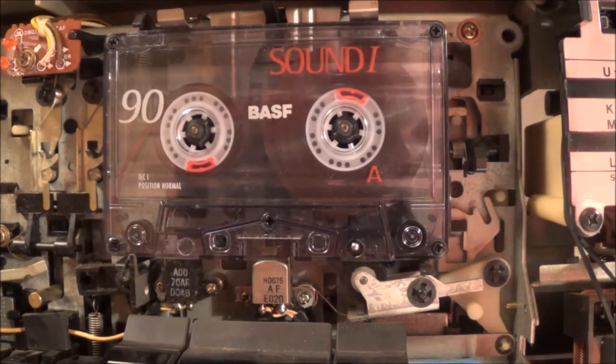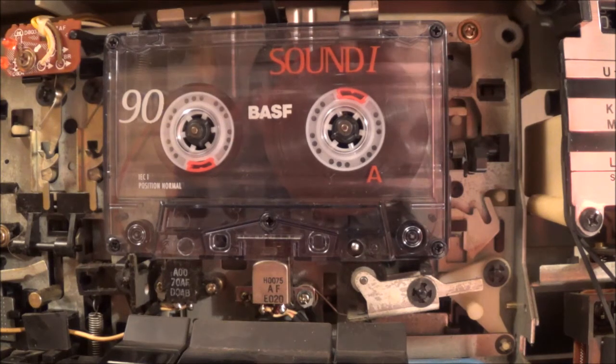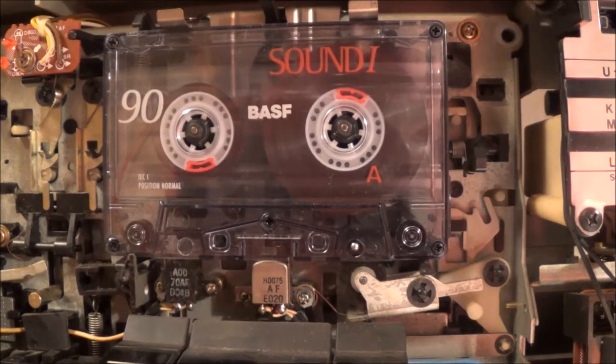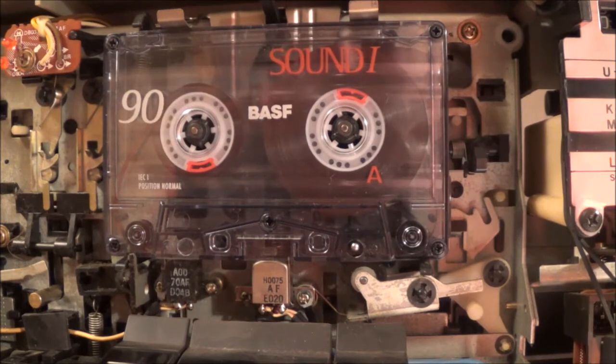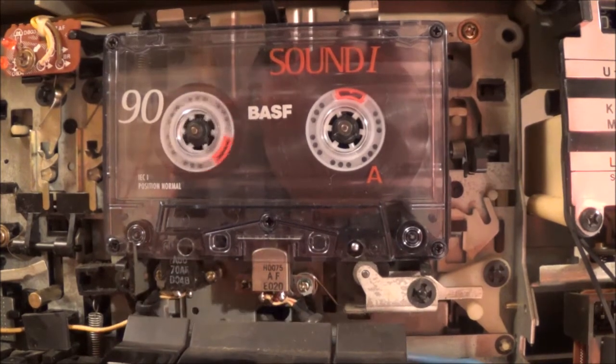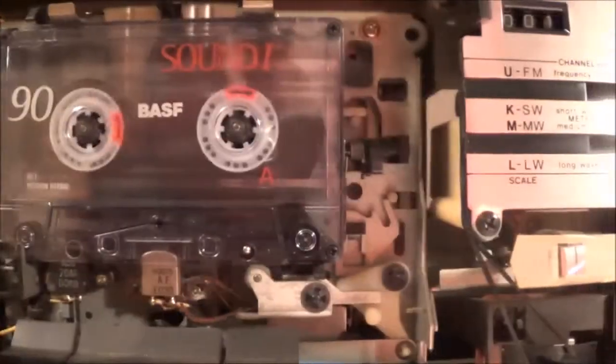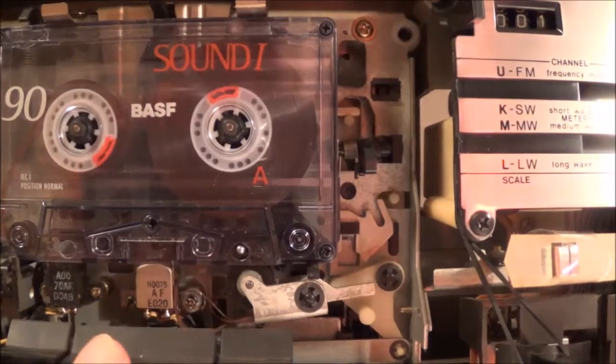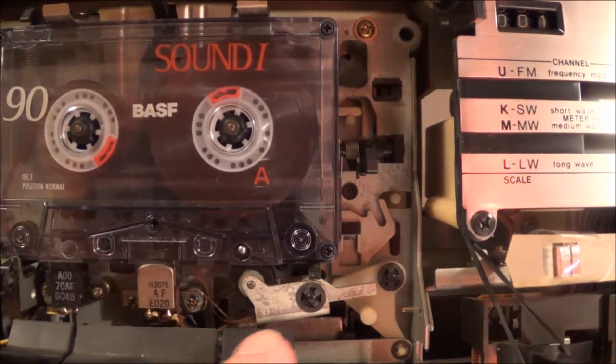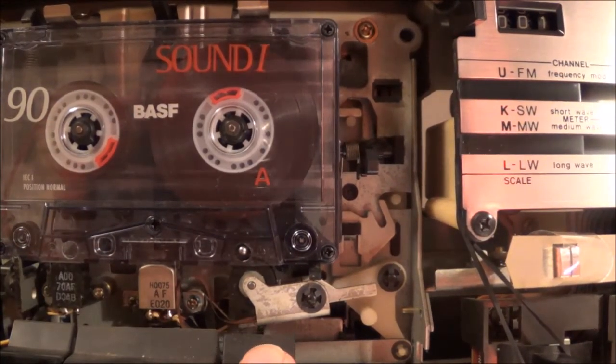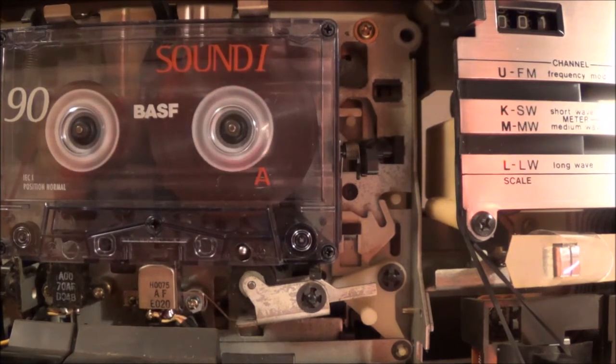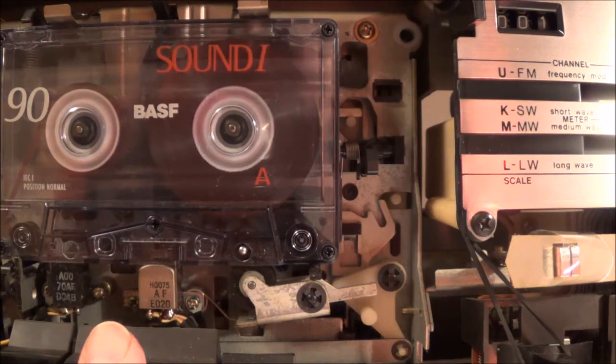So I got the belts in and just started playing around with the cassette deck, and then I noticed the following. When I hit play, the tape actually starts spilling out right down here, so I've got to take a closer look at that. Fast forward and reverse seem to be fine.